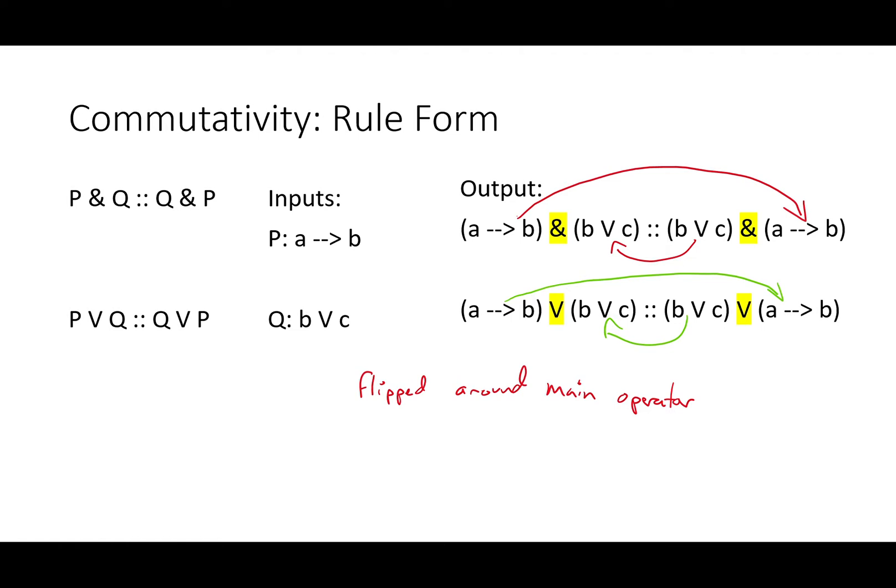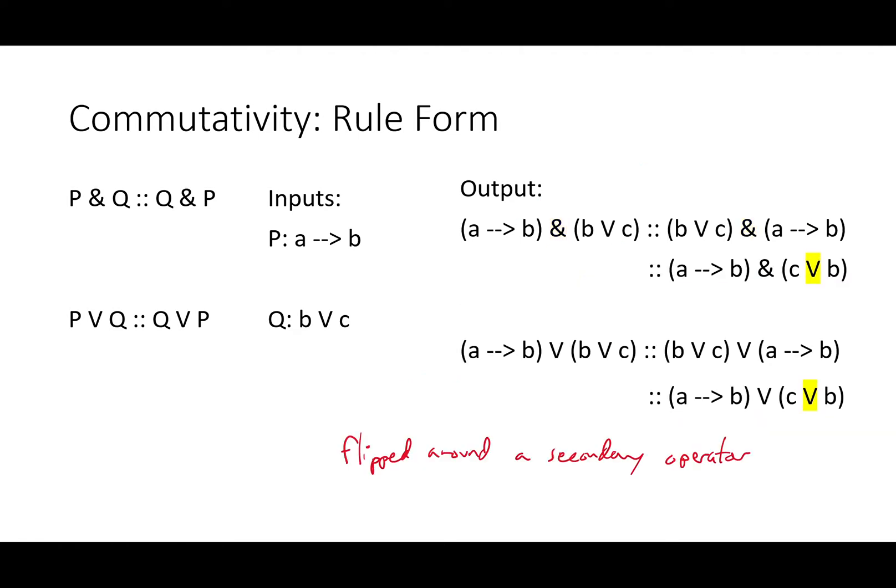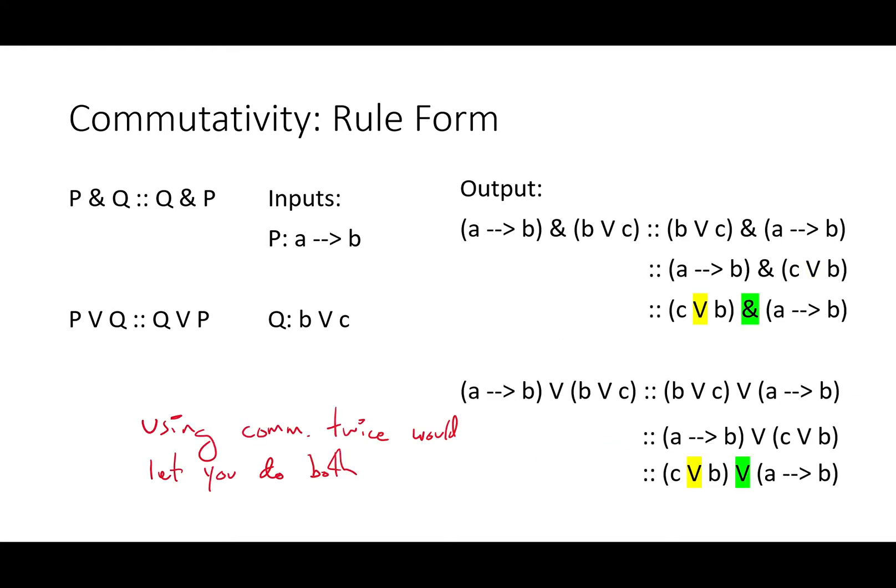Here we flipped these statements around the main operator. If we wanted to though, we could look at that B or C in Q and we could flip that into C or B. And if we really wanted to, we could use commutativity twice and do both, flipping around the main operator and that secondary V.